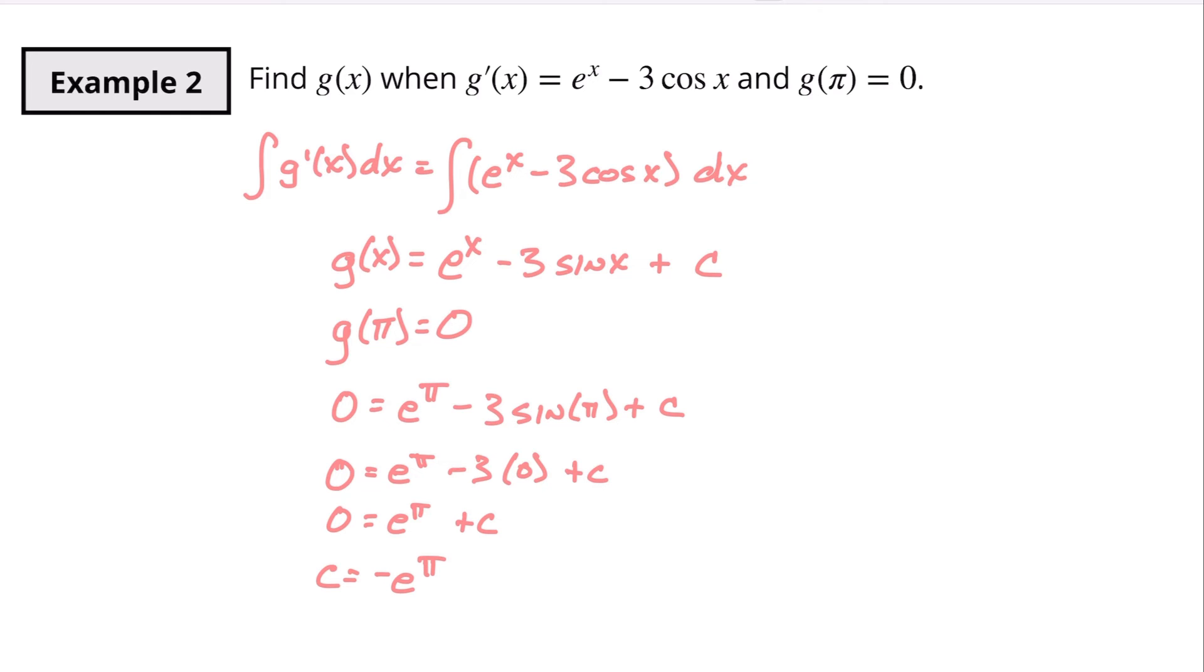So zero equals e to the pi minus zero plus c. So c is equal to minus e to the pi. Alright. Well that's kind of strange. But let's put that back in. So g of x is equal to e to the x minus three sine of x minus e to the pi. So that should be our function.